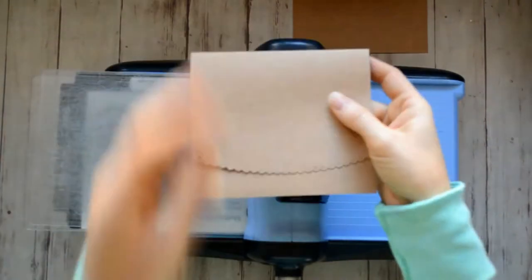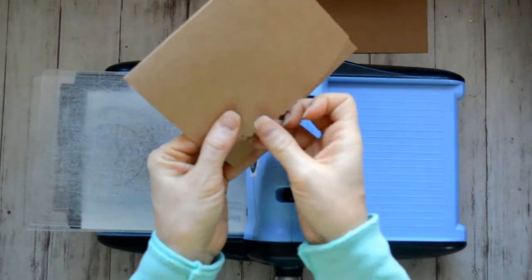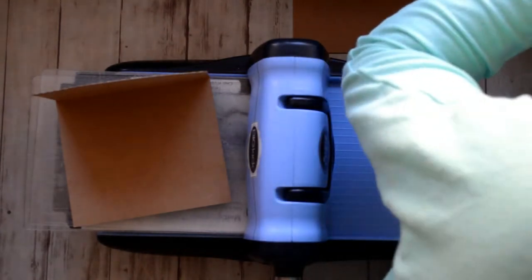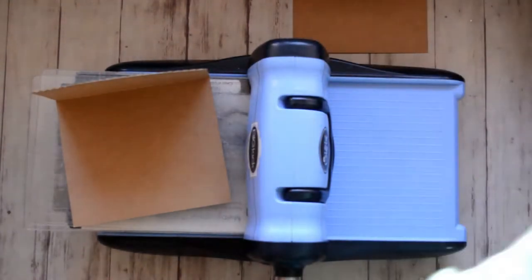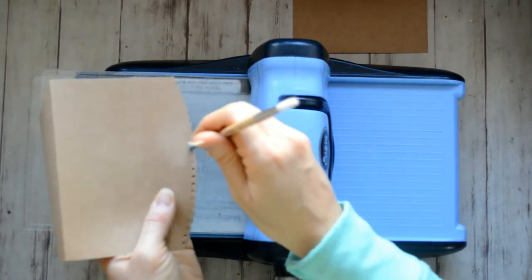And so I'm just running the border die through my Big Shot here. And I'm searching for my paper piercing tool, but I couldn't find it. So I'm using a paintbrush here to poke out the little circles.